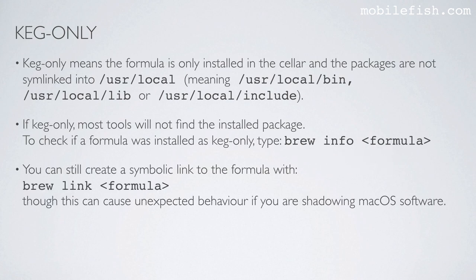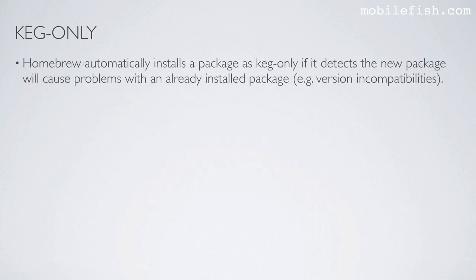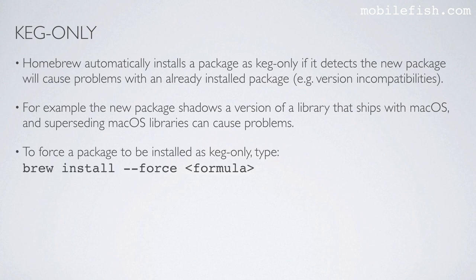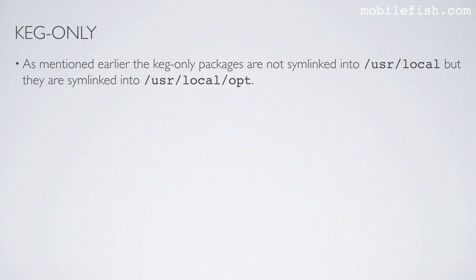You can still create a symbolic link to the formula with this command, though this can cause unexpected behavior if you are shadowing macOS software. Homebrew automatically installs a package as keg-only if it detects the new package will cause problems with an already installed package. For example, if the new package shadows a version of a library that ships with macOS, and superseding macOS libraries can cause problems. To force a package to be installed as keg-only, type this command. The keg-only packages are not symlinked into this path, but they are symlinked into this path.